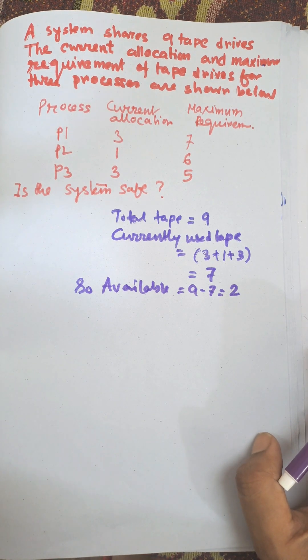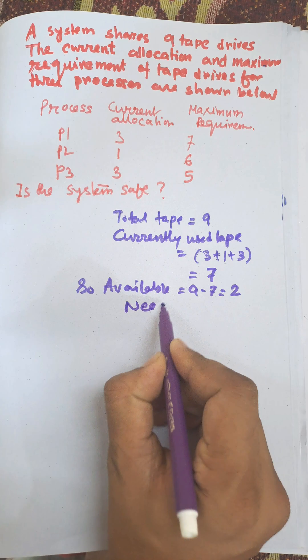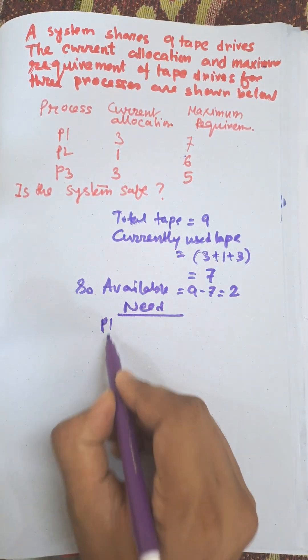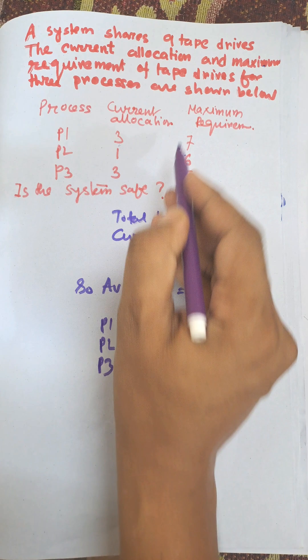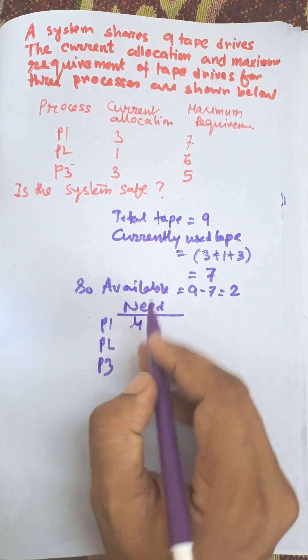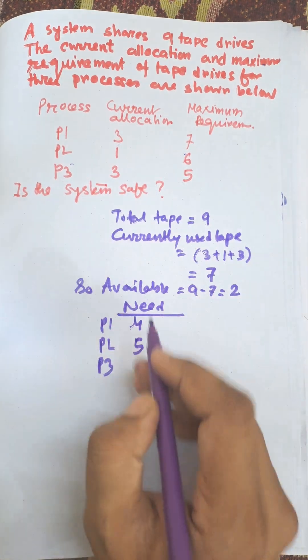Need equals max minus allocation for P1, P2, P3. Need for P1 is seven minus three equals four. Need for P2 is five. Need for P3 is two, which is max minus allocation.